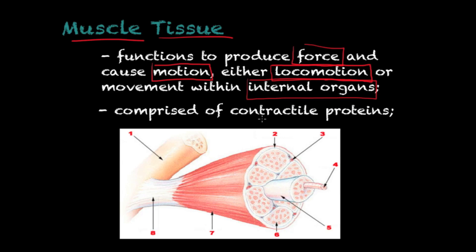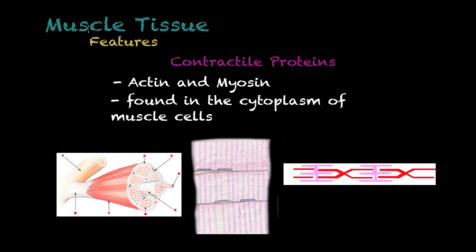The second important key thing about muscle tissue cells is that they are comprised of what are called contractile proteins. These are special proteins called actin and myosin, and these two form a special device that allows the cell to contract and therefore produce the movement we have been talking about.